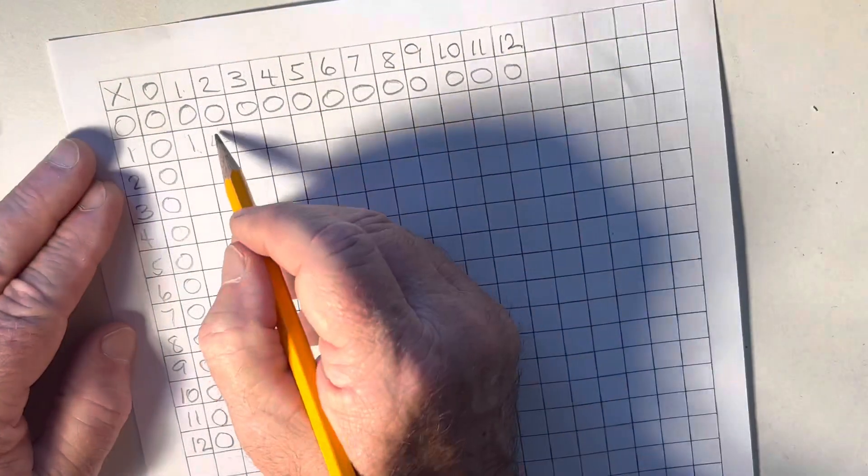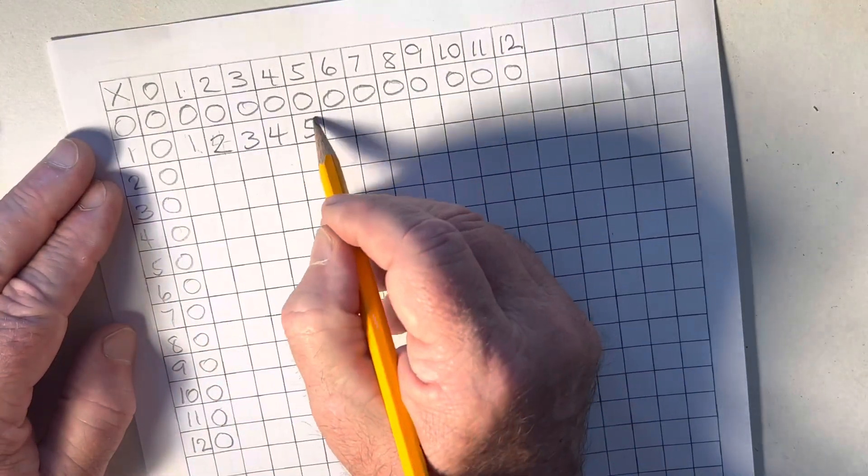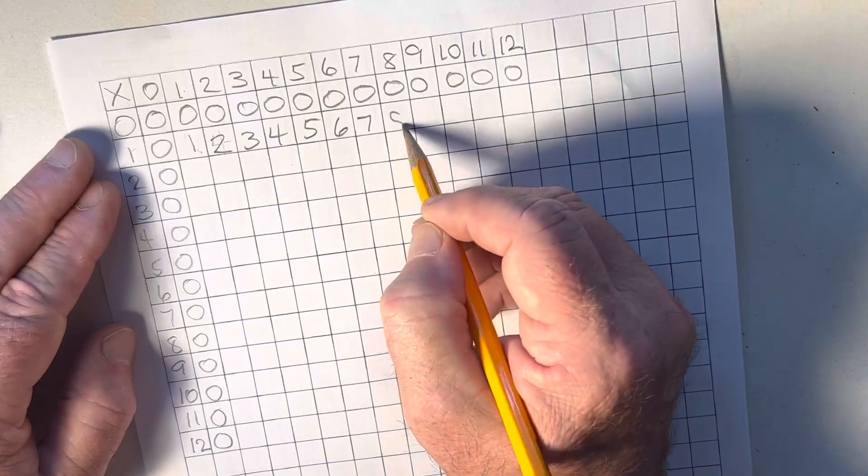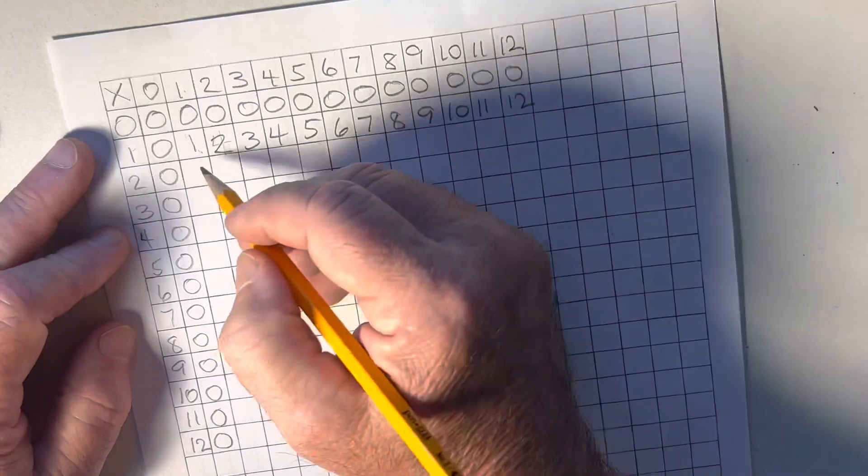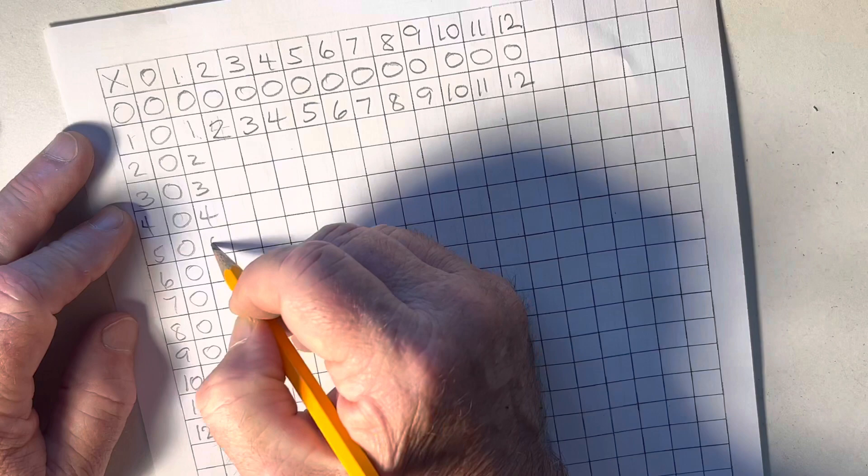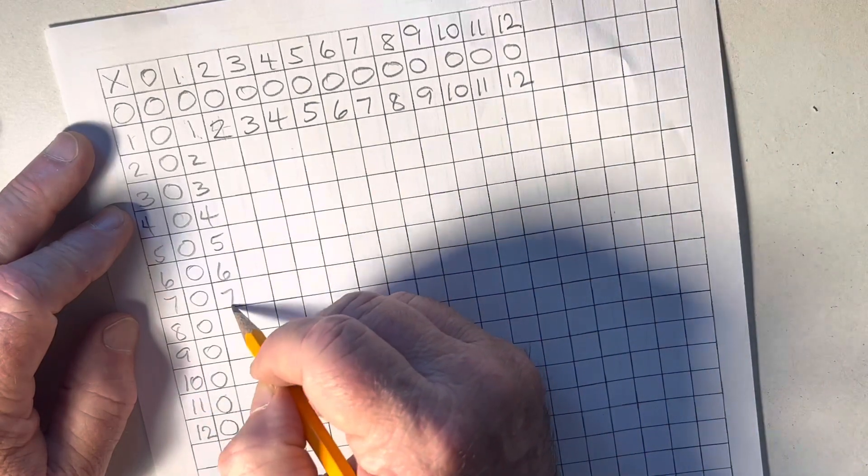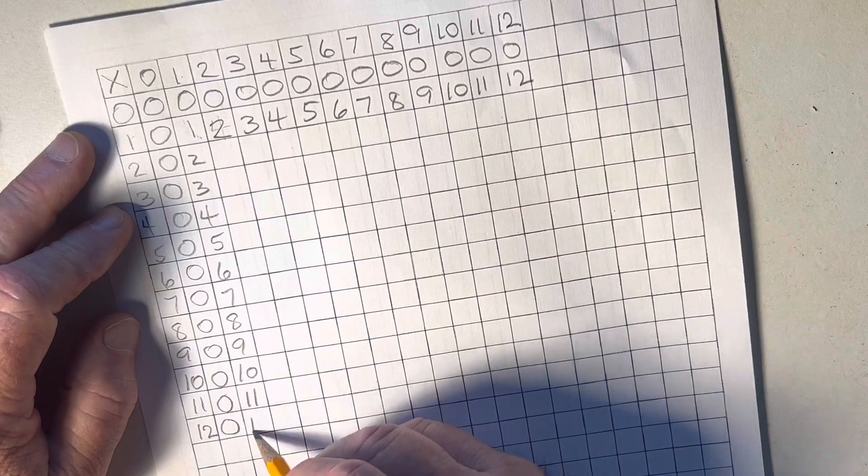Now we repeat. 1, 2, 3, 4, 5, 6, 7, 8, 9, 10, 11, 12. And again, down also. 1, 2, 3, 4, 5, 6, 7, 8, 9, 10, 11, 12.